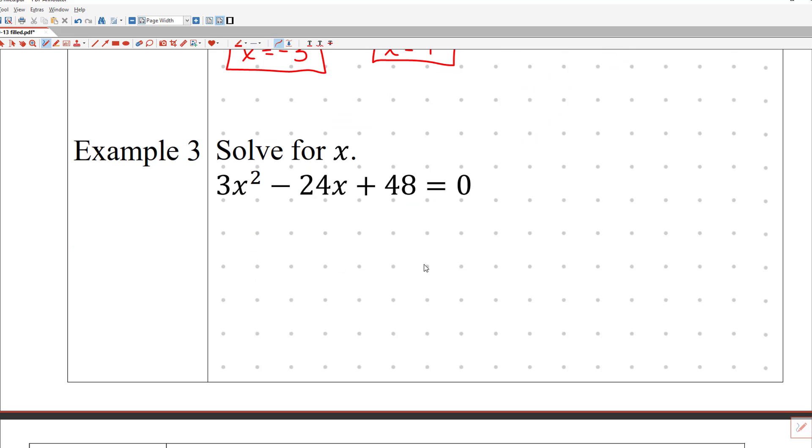In our final example, this one is only going to have one answer. Let's go ahead and factor out the greatest common factor, which again is going to be 3, the leading coefficient here. So 3 and then x squared minus, what's 24 divided by 3? That's 8. So minus 8x. Then plus, 48 divided by 3, what is that? That's actually 16. And that's set equal to zero.